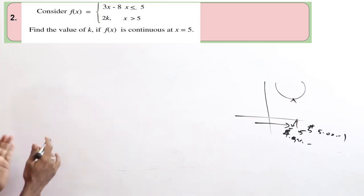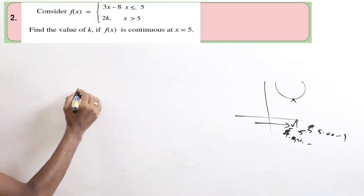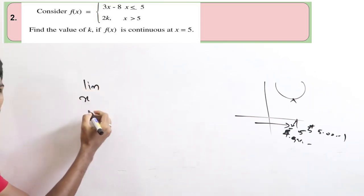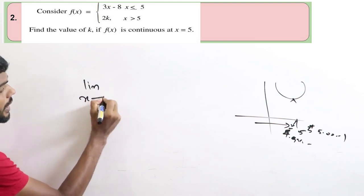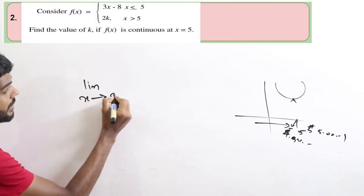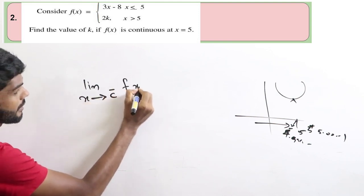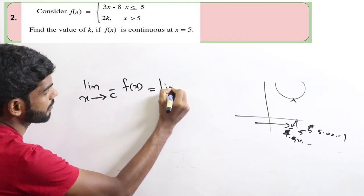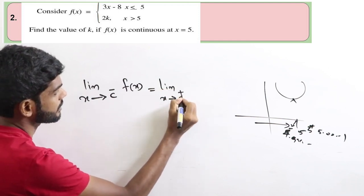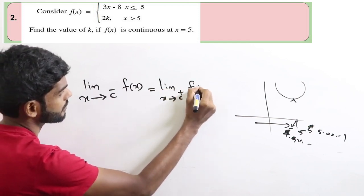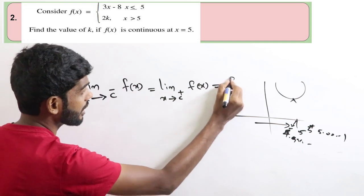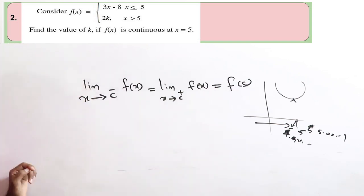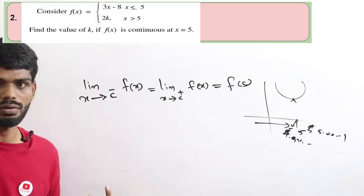So we can apply the formula: limit x tends to c minus of f of x equal to limit x tends to c plus of f of x, equal to f of c.